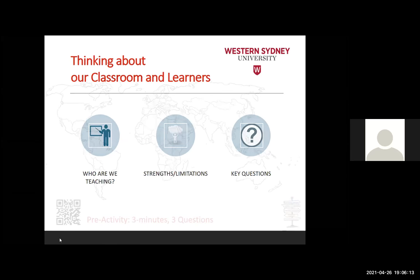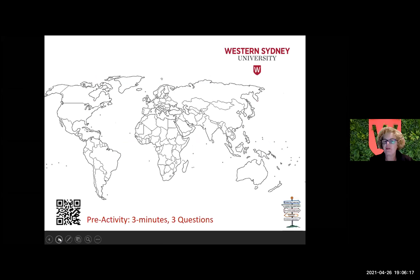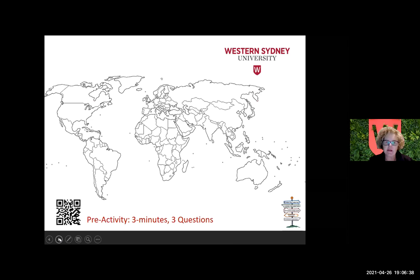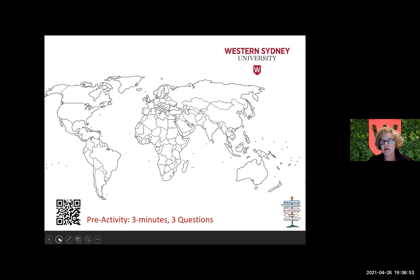Thank you very much to everybody that did the pre-activity — my three minutes, three questions. I was very impressed by the number of responses I received. Using the QR code or the web link, you've been able to access a free app called Mentimeter. If you only use three questions per poll or activity, it will be free for you. It's quite a good tool to put in your toolbox, especially if you are working with students who have access to mobile devices, set computers, or laptops.